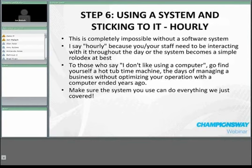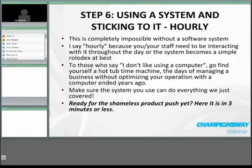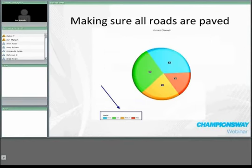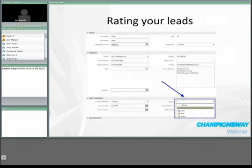It's time for the shameless product push. In three minutes or less I'm going to quickly show you Perfect Mind and how it does all these things. Every time you generate a lead you can record where it came from — just pick the source and save it. You'll then have a report in a pie chart showing your contact channels and where leads are coming from. If you're not getting anybody through a particular channel, something's wrong. For rating leads, we use cold, hot, and warm — it works. To know why a lead is rated a certain way, you look at the logs.